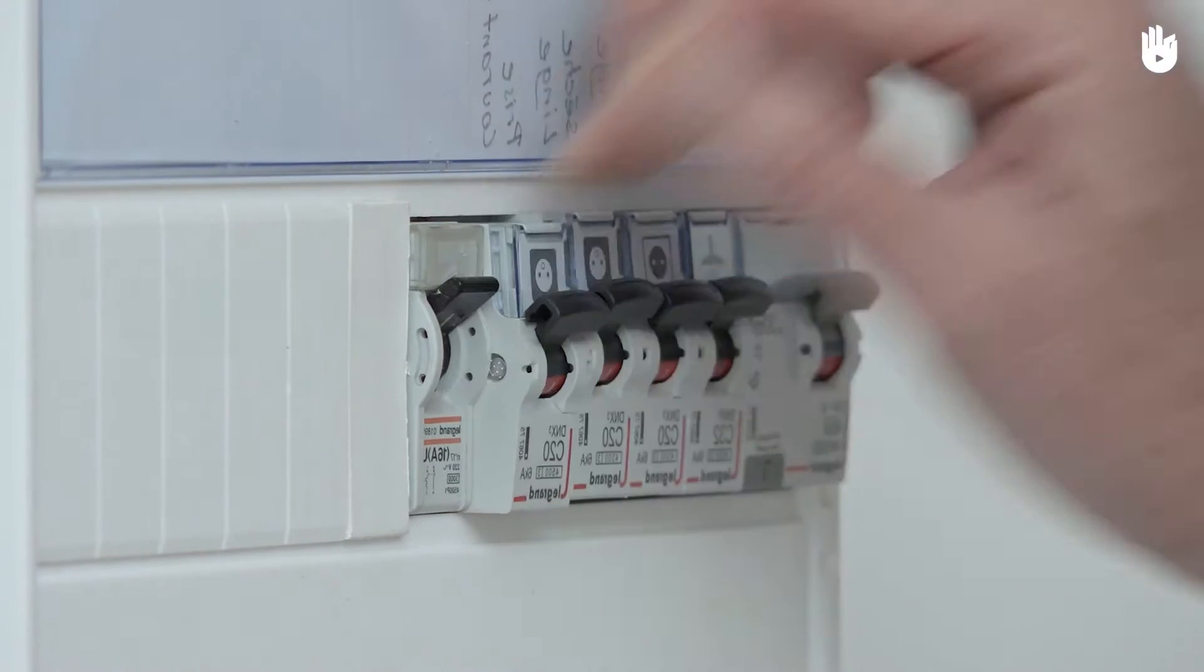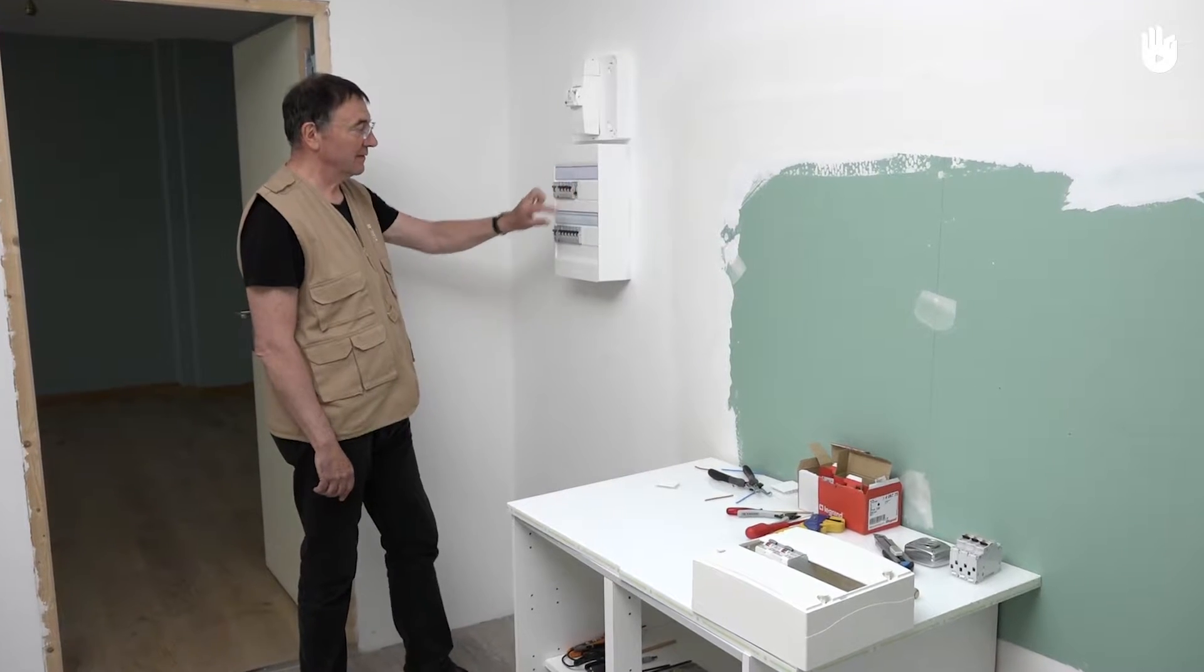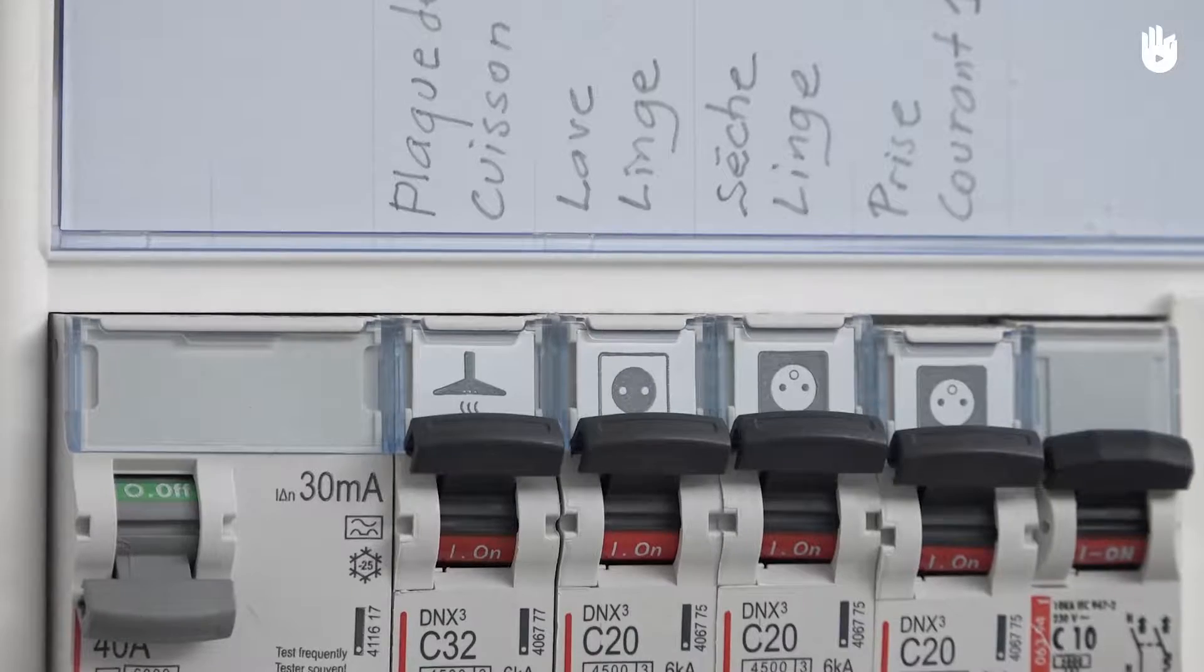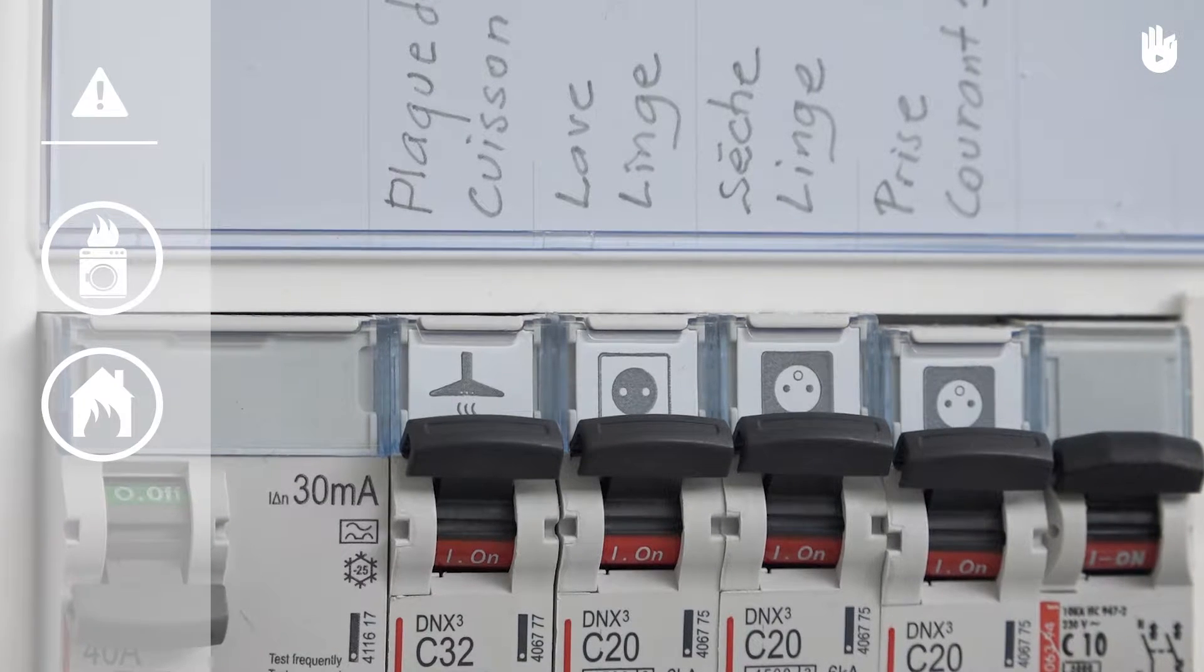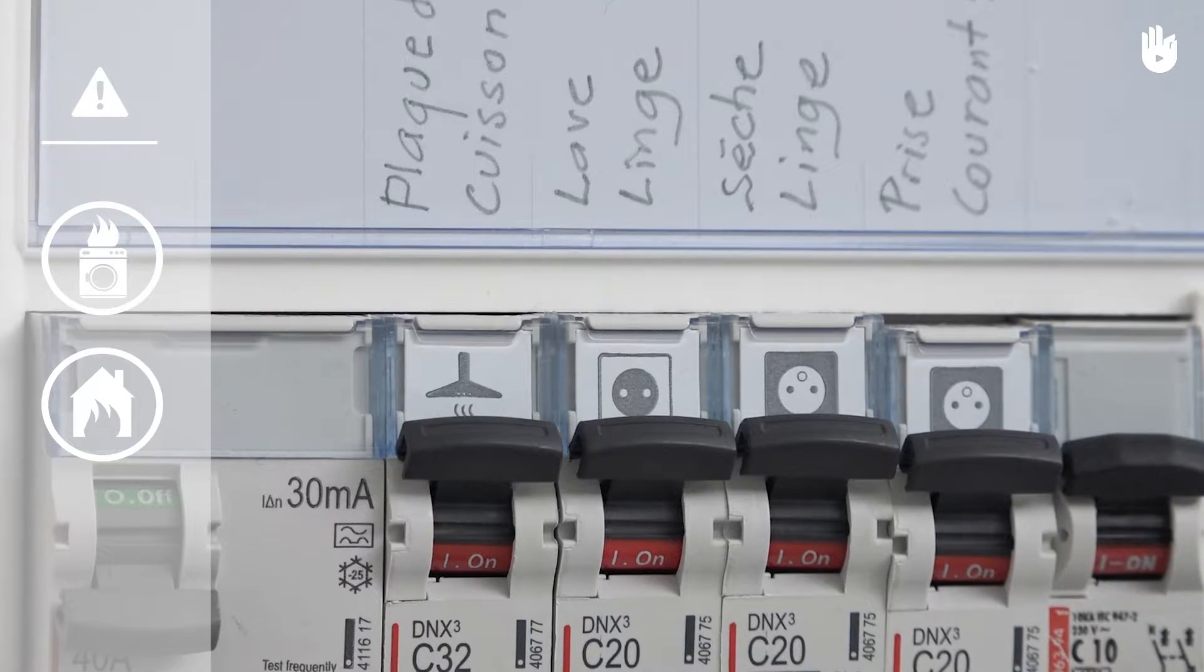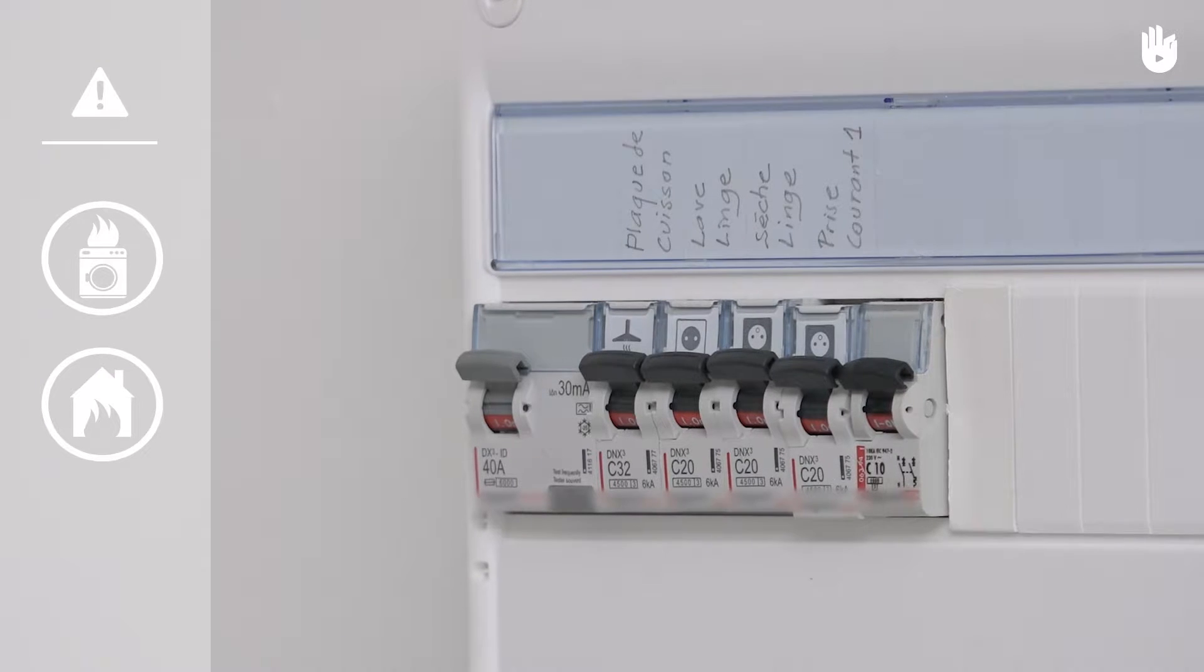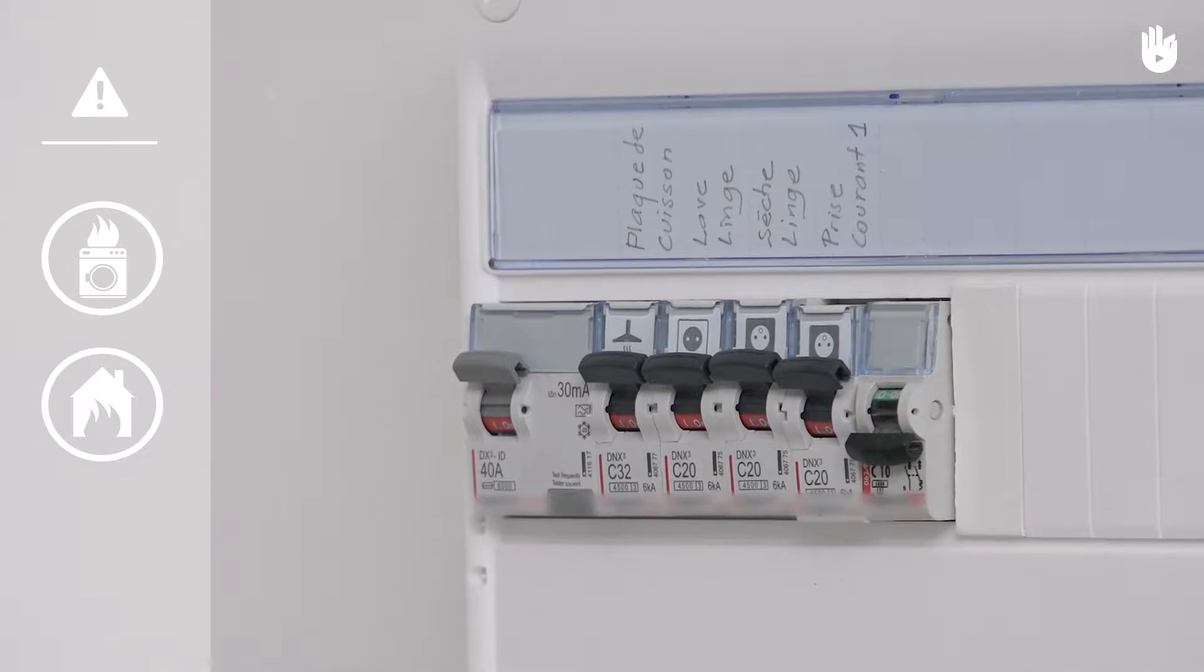In this video, you will learn how to protect an electrical circuit against surges and short circuits. Protecting the circuit makes it possible to protect equipment by preventing fire risks and the destruction of the electrical installation by current it cannot handle.